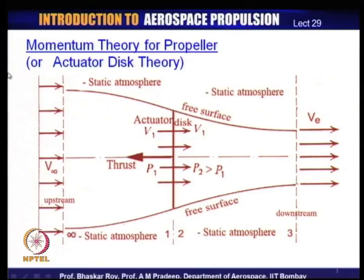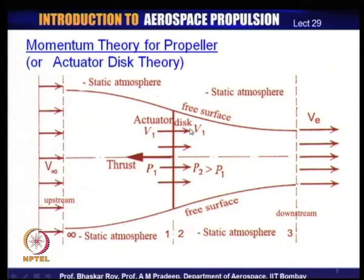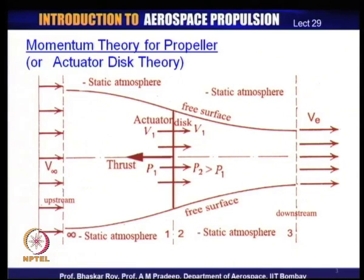We have an actuator disc which essentially replaces a propeller — it has infinitesimal thickness, is 100 percent porous, and has no mass whatsoever. The velocity of the flow as it approaches the actuator disc acquires a value V₁ and remains V₁ through the disc. However, the pressure across the disc jumps from P₁ to P₂, and this jump in pressure manifests itself in the form of thrust creation. After leaving the actuator disc, the flow continues downstream and acquires uniform flow far downstream with velocity V_e.